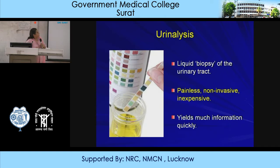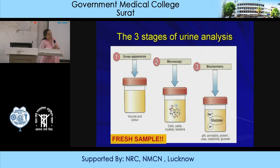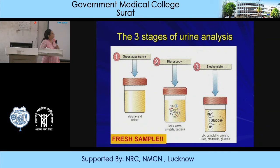There are three stages of urine analysis. First, we look at the gross appearance - the volume, color, odor, and anything appearing in the urine. Then we look at the cells, casts, crystals, and bacteria under the microscope and do microbiological investigations. Then we do the biochemistry - pH and osmolality. This requires the department of biochemistry, the department of microbiology, and even radiology. We can also do the kidney function test with the help of the pathology department.